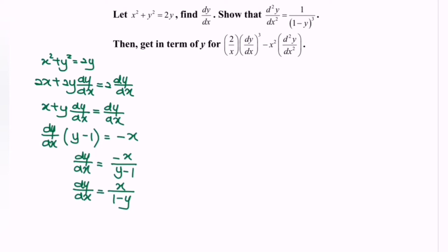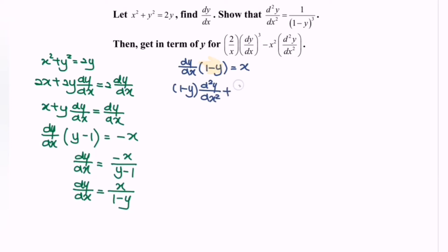For the second part, we need to show that the second derivative equals 1 over (1 minus y) to the power of 3. My suggestion is to focus on the equation dy/dx multiplied by (1 minus y) equals x, and differentiate this a second time using the product rule — differentiating the first derivative to obtain the second derivative.